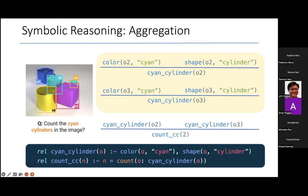In this case, there are two objects which are both cylindrical and of cyan color. If you squint at this image, you will see that O2 satisfies that condition. O2 both has color cyan and shaped cylinder. So O2 qualifies.